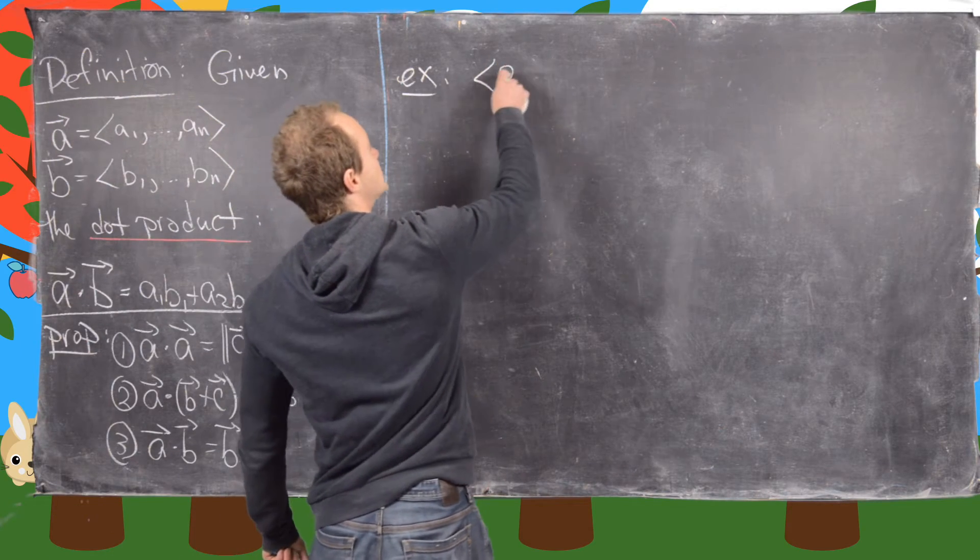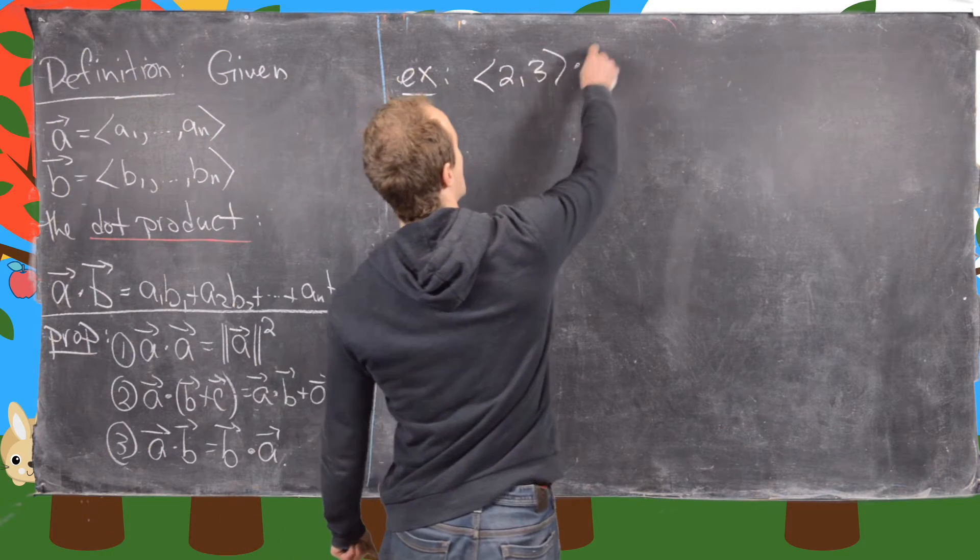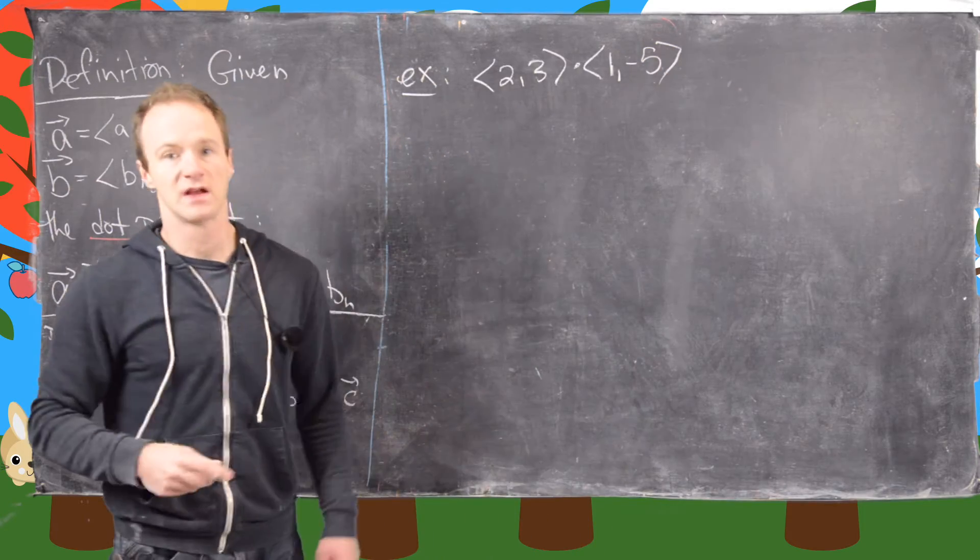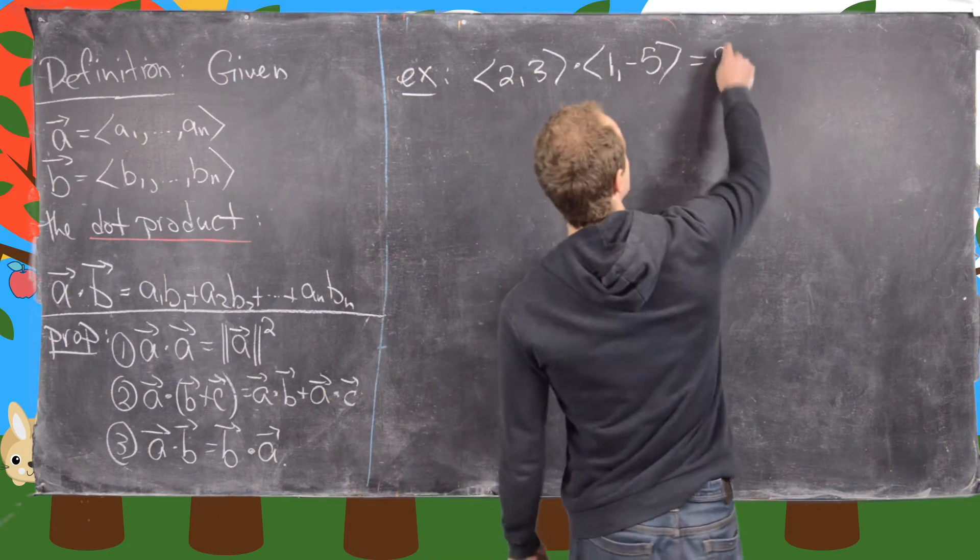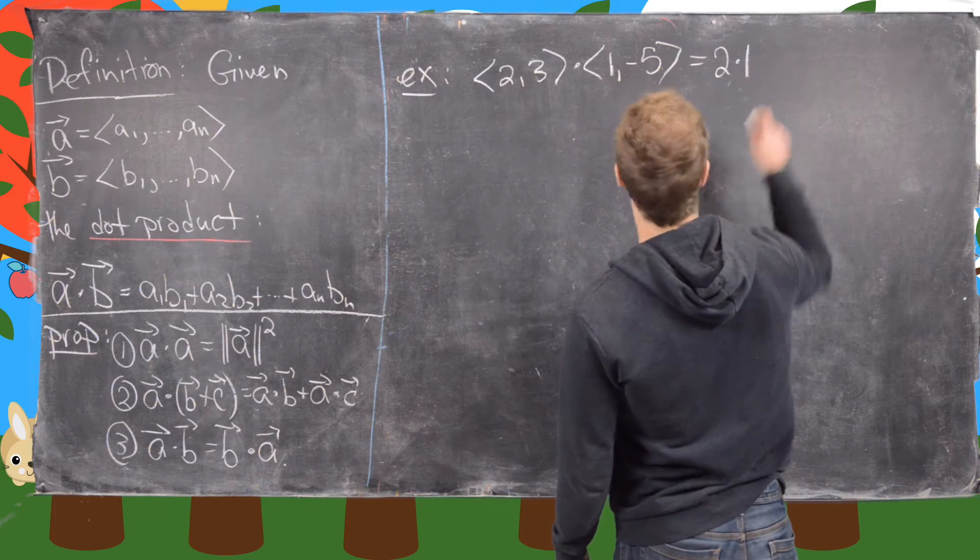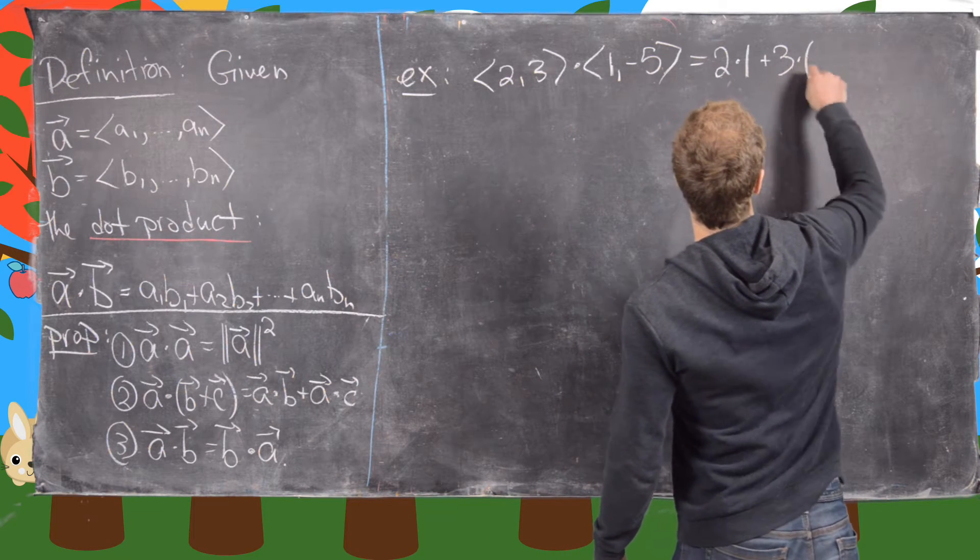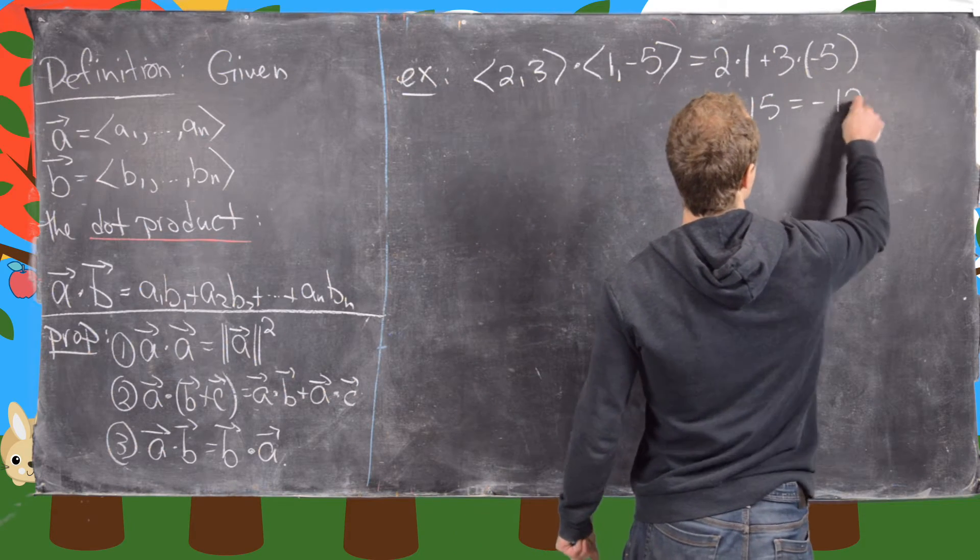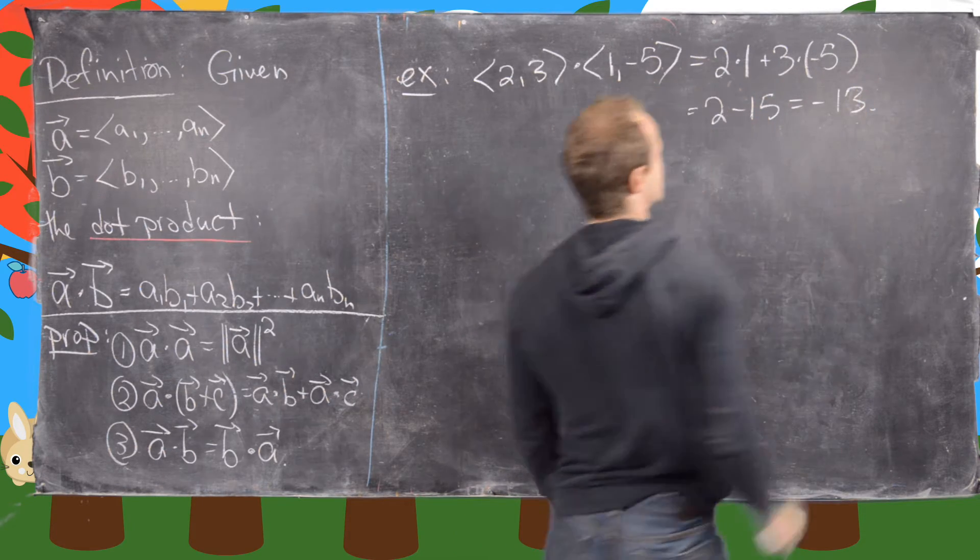So if we have 2 comma 3 dot 1 comma minus 5, what that will give us is 2 times 1 plus 3 times minus 5. So that is 2 minus 15, which equals negative 13.